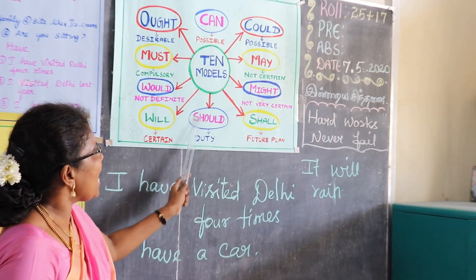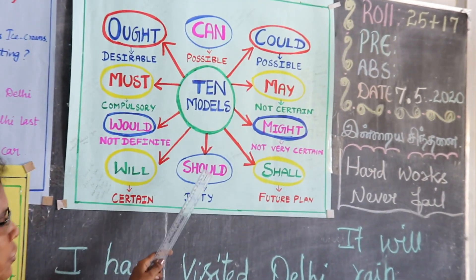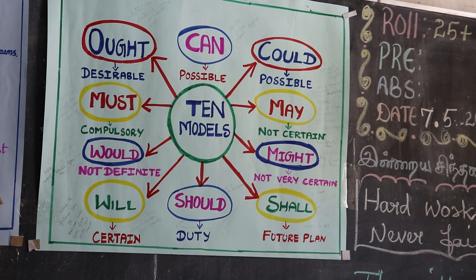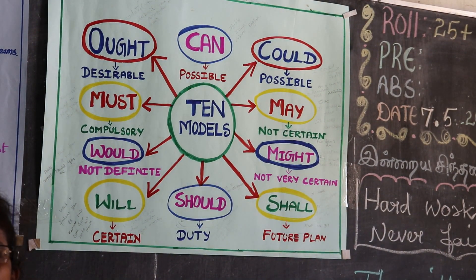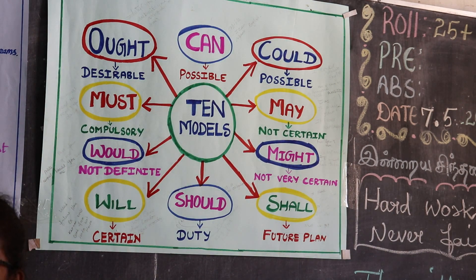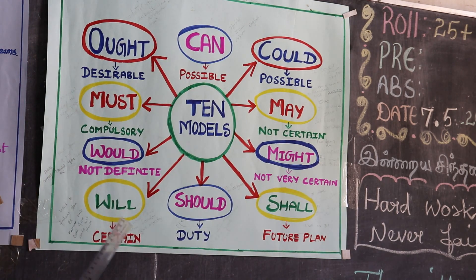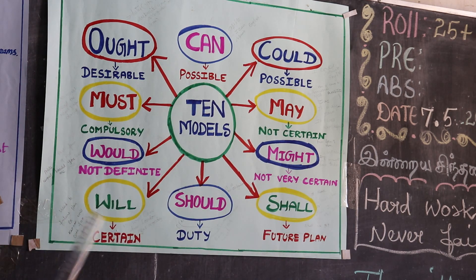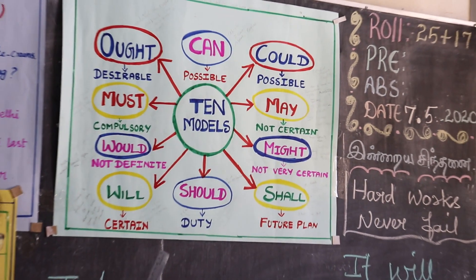Should is the past form of shall. It shows obligation and duty. Examples: 'You should obey the rules,' 'You should obey your parents,' 'You should obey your elders.' Will is also used for future plans and certainty. Example: 'Cannon will come from London next week' — next week is future, so we use will.